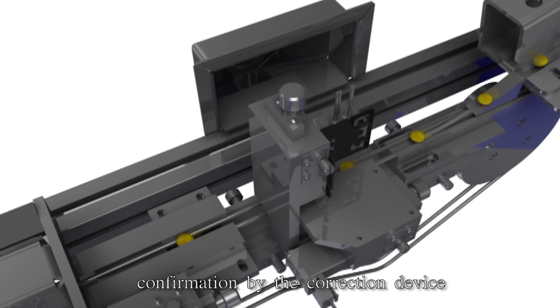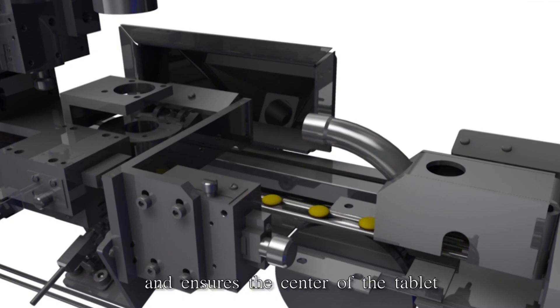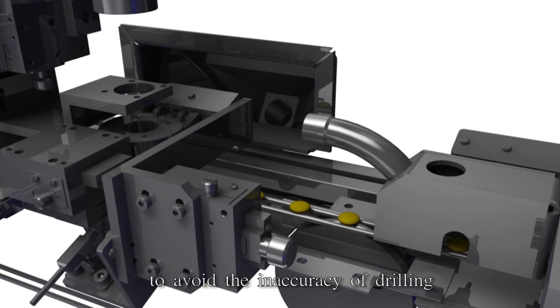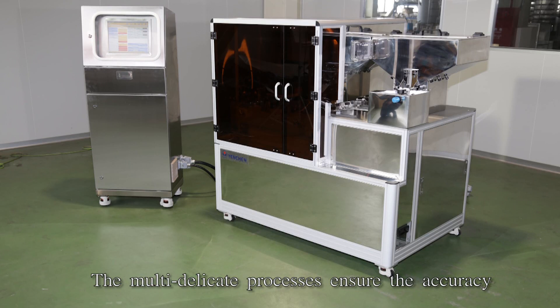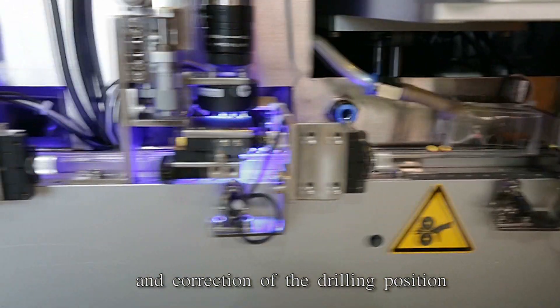Before the drilling process, confirmation by the correction device takes place again and ensures the center of the tablet is at the center of the conveyor to avoid inaccuracy of drilling. The multi-delicate processes ensure the accuracy and correction of the drilling position.